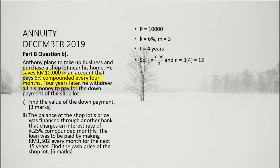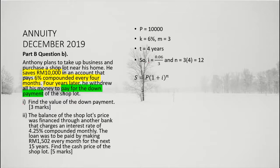From this information, we know that the interest rate per period, denoted as small letter i, is equal to 0.06 divided by 3, and the total number of interest payments, denoted by small letter n, is equal to 12, which is obtained by multiplying m with t. Since the down payment is equivalent to the maturity value of the money saved, we use the compound amount formula: S equal to P multiplied by 1 plus i to the power of n.